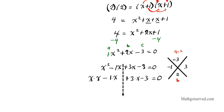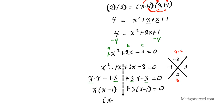From the first two terms I factor out x, giving x(x minus 1). From the last two terms I factor out 3, giving 3(x minus 1). Since both groups share (x minus 1), I can factor that out: (x minus 1)(x plus 3) equals 0.